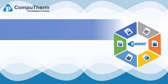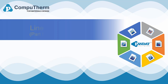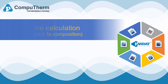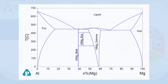This video demonstrates how to perform a line calculation for a given composition in a temperature range. As an example, we choose an aluminum magnesium binary alloy with 30 atomic percent of magnesium, from 700 degrees C to room temperature.